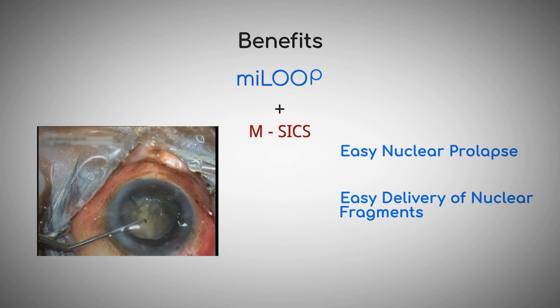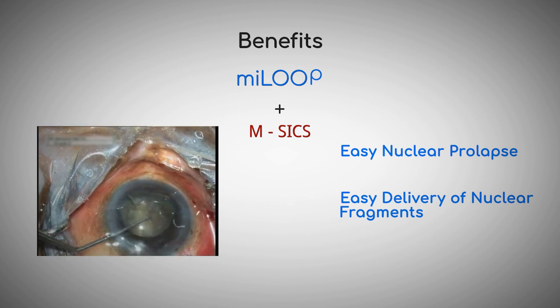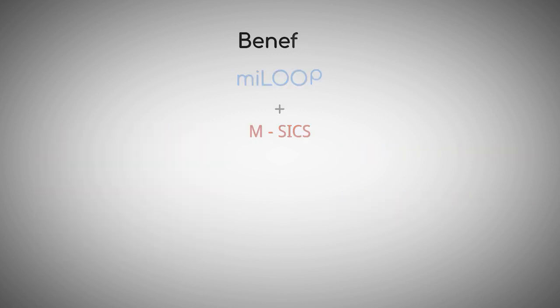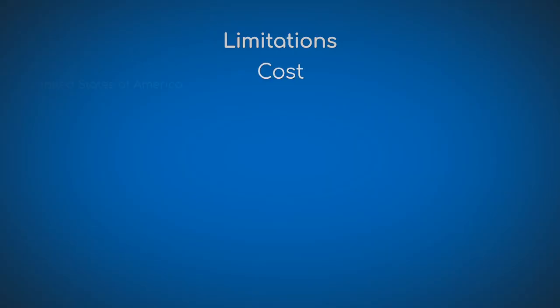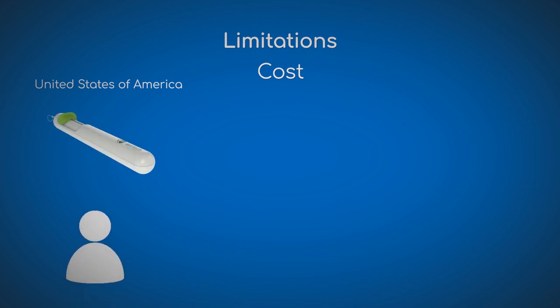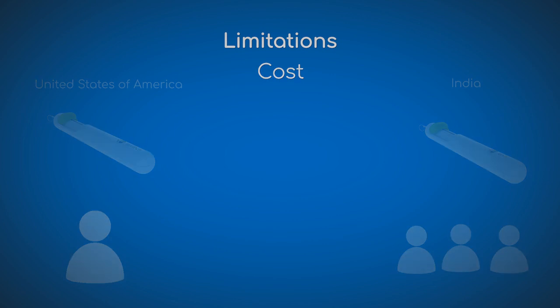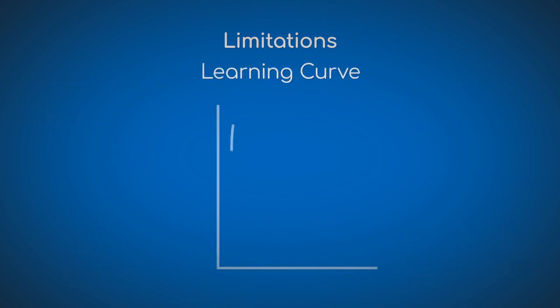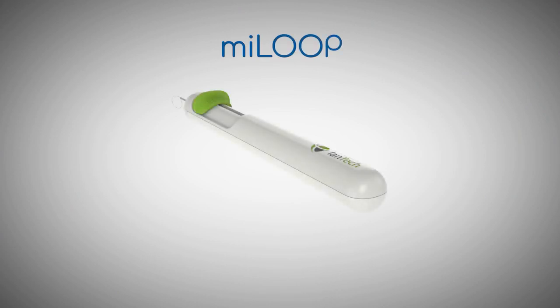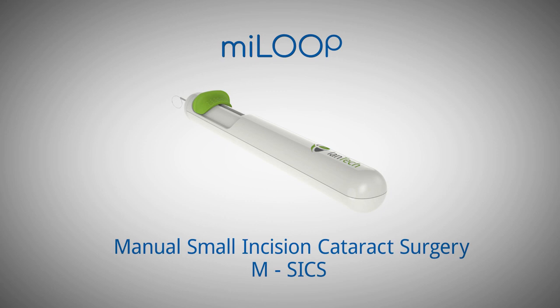Smaller fragments make nucleus delivery easier and reduce the risk of endothelial damage. The limitations include cost — in the U.S. these devices are approved for single use, however in India we can gas sterilize them for multiple uses. There is a small learning curve as when beginning any new technique. We conclude that the My Loop is here to play a significant role in managing hard and difficult cataracts in the developing world.